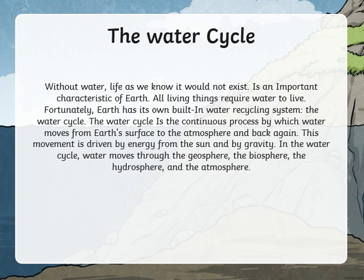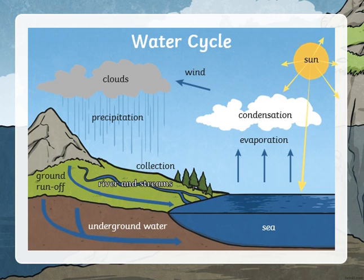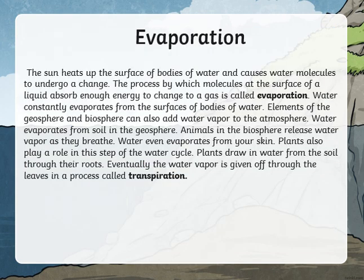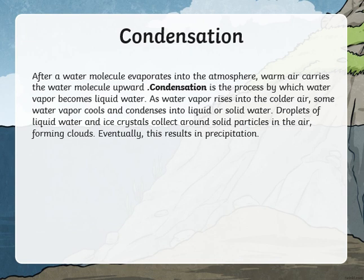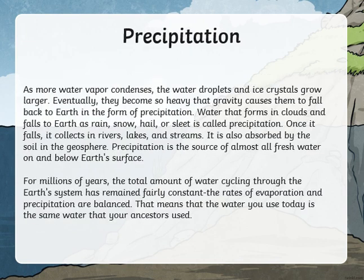We defined what the water cycle is and said that the water cycle is a continuous process by which water moves from Earth's surface to the atmosphere. We said there are three essential parts of the water cycle: evaporation, condensation, and precipitation. We talked about each of these as a process thoroughly and we discussed each process on its own.